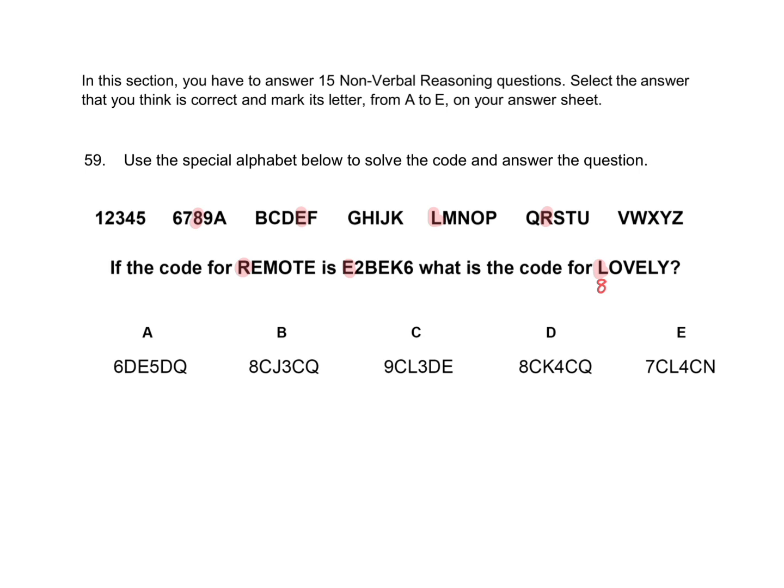Now look at the next letter in REMOTE. It's the letter E, represented by the number 2. Here is the letter E and here is the number 2. To get from E to 2, I would need to jump backwards 5, 10, 11, 12 places, so one less place than I jumped backwards last time.